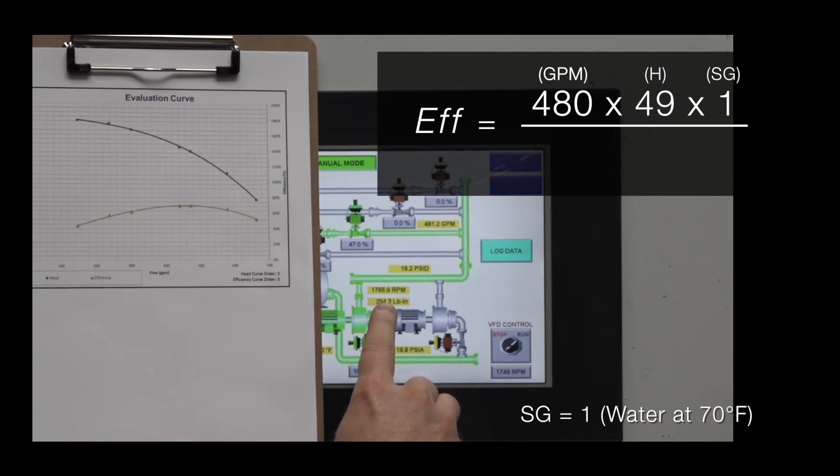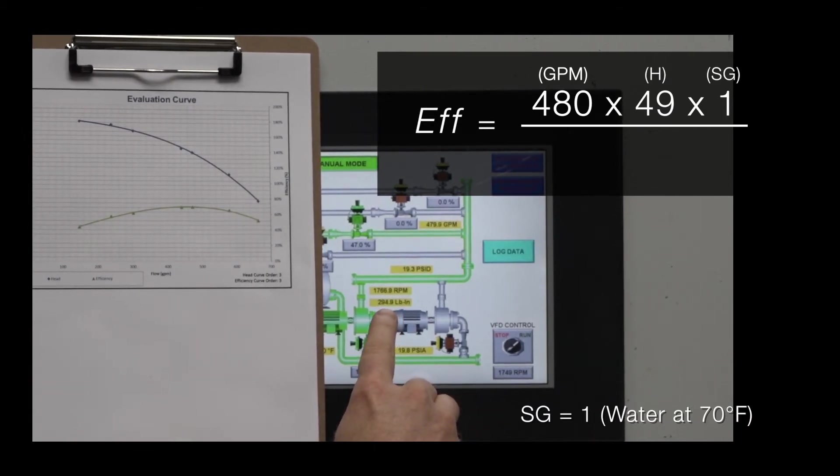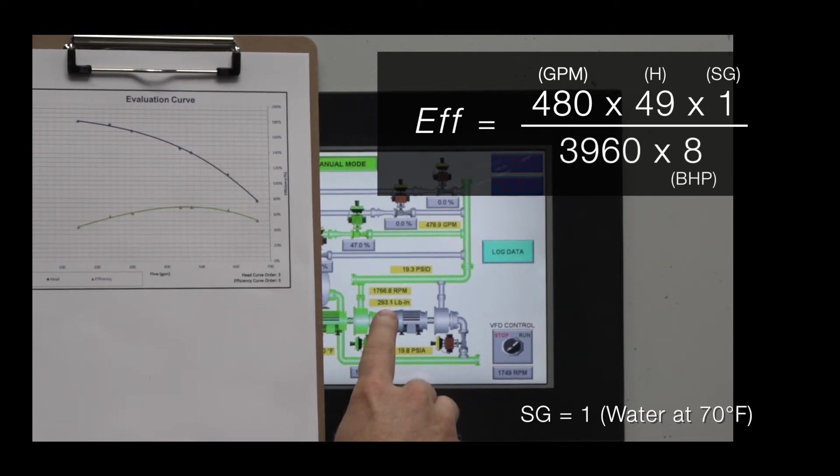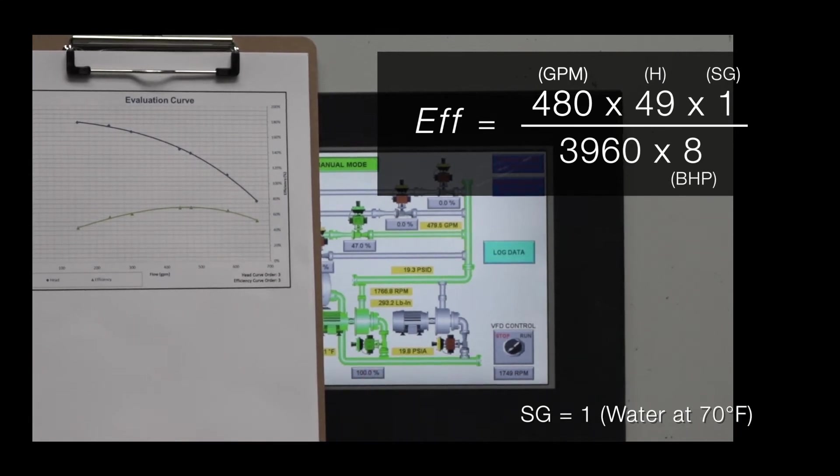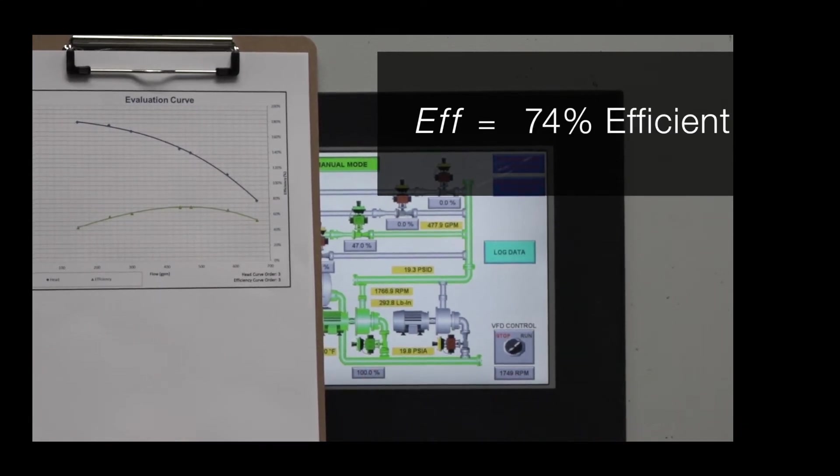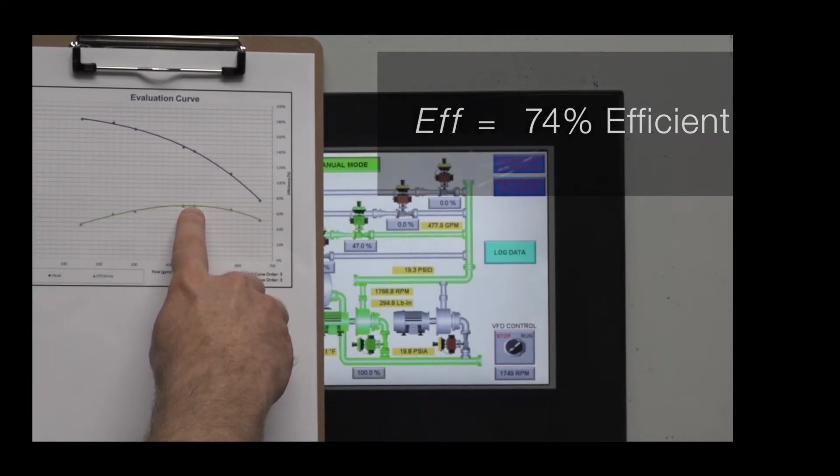We then are measuring RPM and torque and this calculates a horsepower of around 8 horsepower. Using this information we're able to calculate this pump is operating near 70 percent efficient and that is what you're seeing on this performance curve.